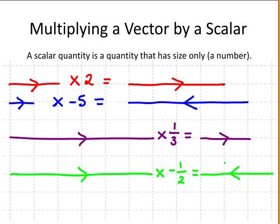Multiplying a vector by a positive scalar changes the magnitude or size of the vector, but its direction remains the same. Multiplying the vector by a negative scalar changes both the magnitude and the direction of the vector.